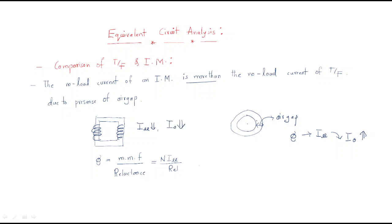In the transformer, the flux travels only through the core itself. The relationship is: flux equals MMF over reluctance, and MMF equals number of turns multiplied by magnetizing current. Whenever the magnetizing current increases, the flux value increases. This is the major difference between the transformer and the induction motor.